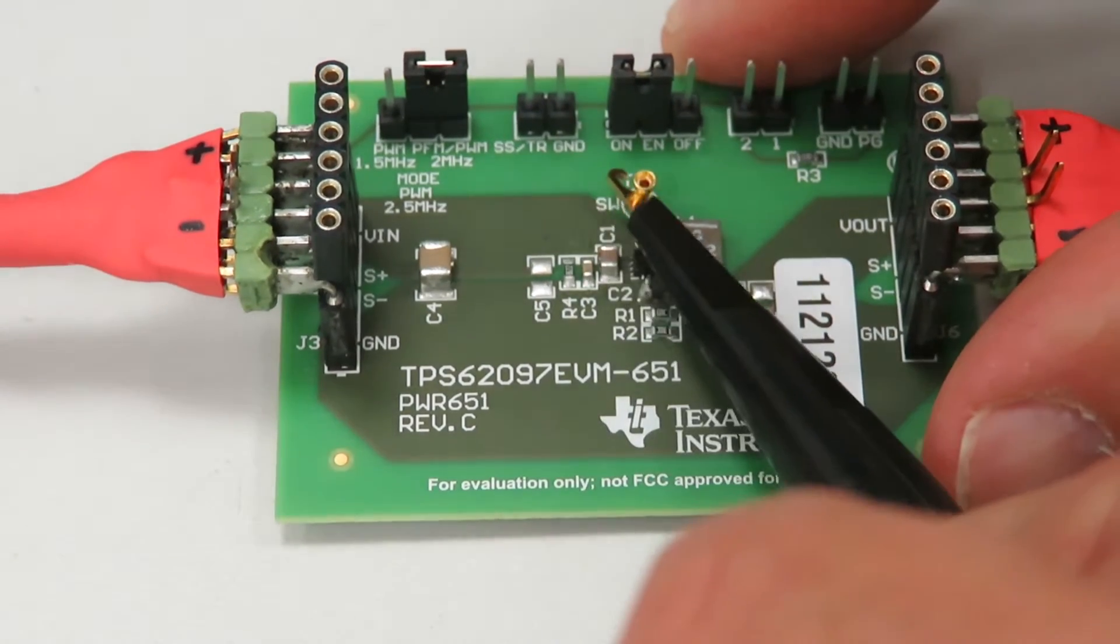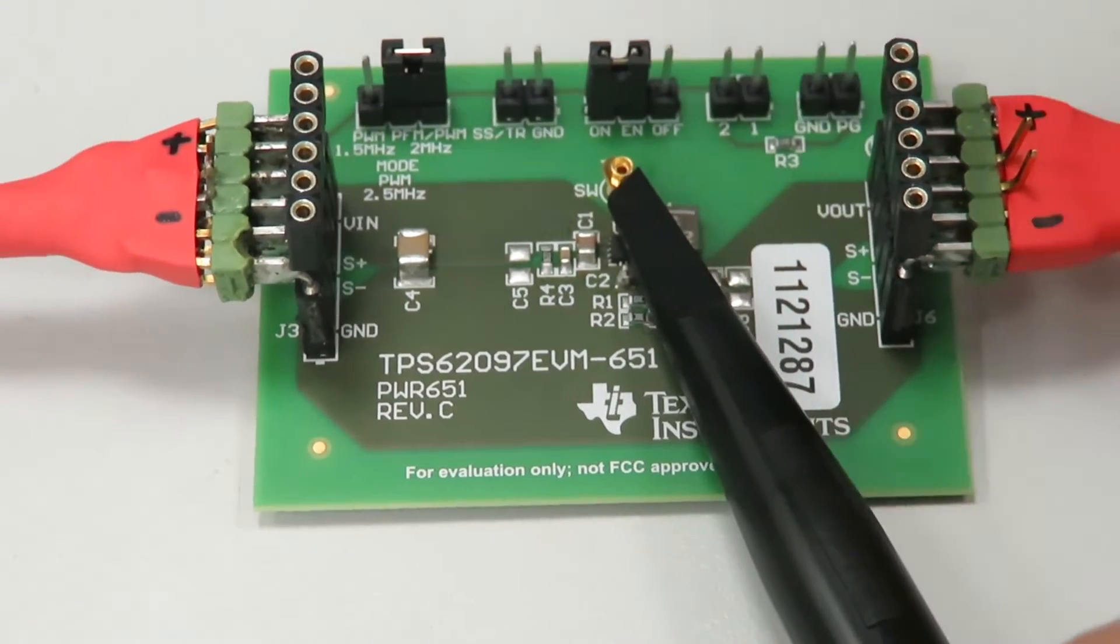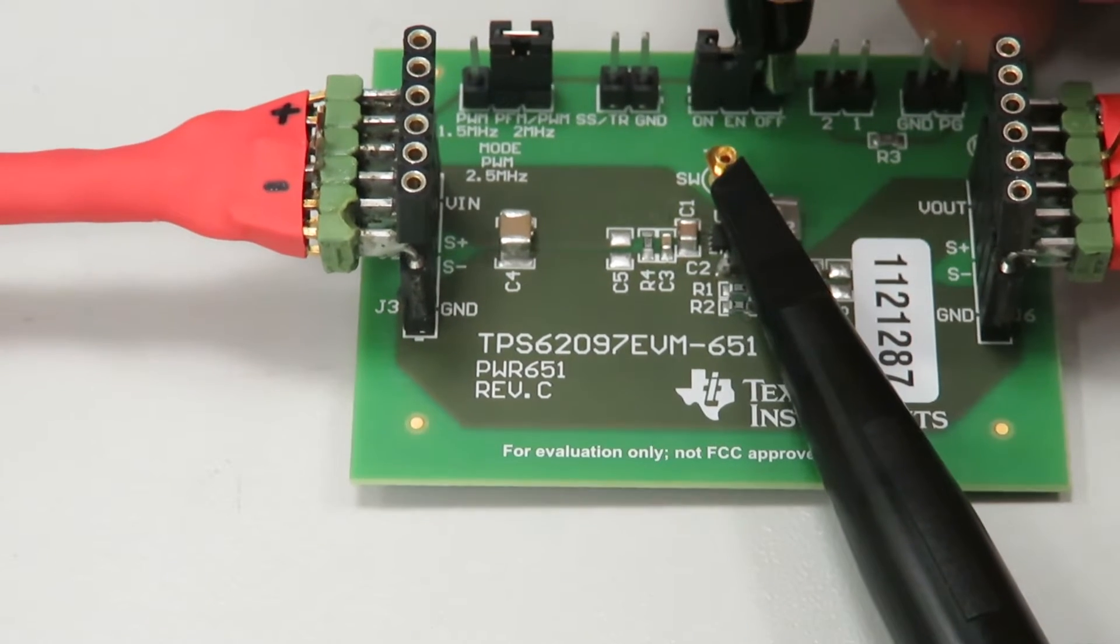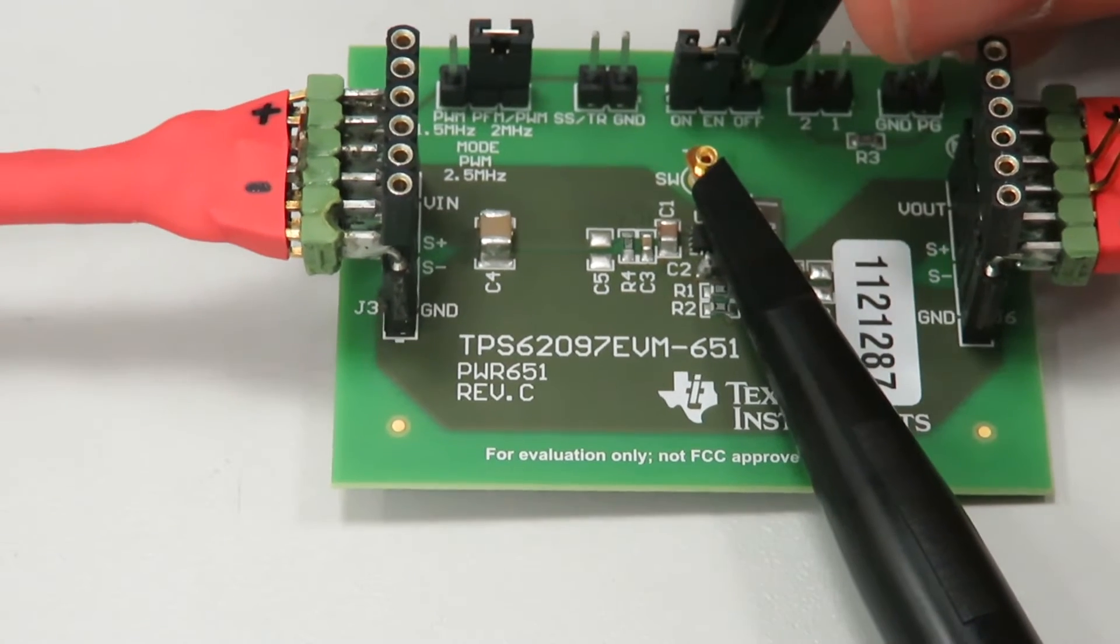We connect the scope probe to the test point that is connected to switch node of the DC-DC converter and the ground clip we just connect to the nearest ground.